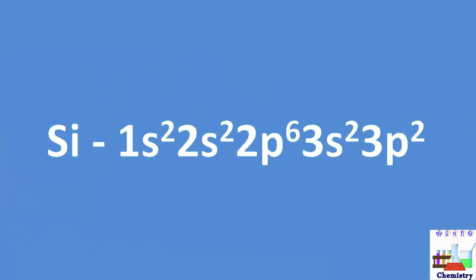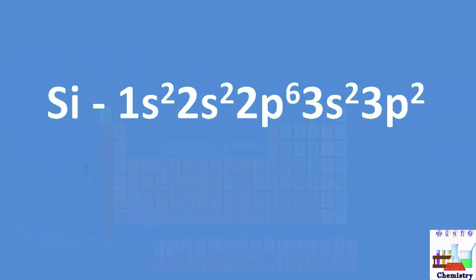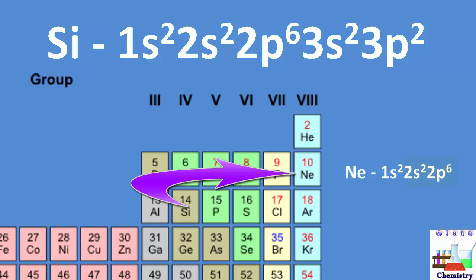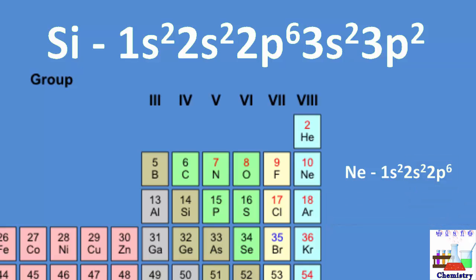To write the abbreviated configuration for an element, begin with the noble gas previous to the element. This is done because the noble gas elements represent a filled outermost or valence electron shell. The very next electron to be distributed will start the next main energy level's S sublevel.